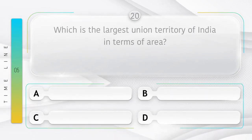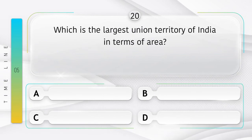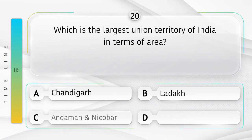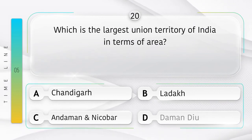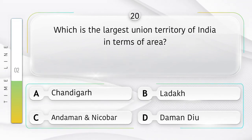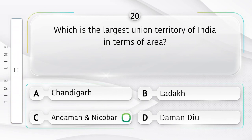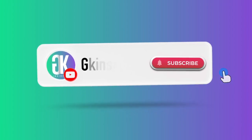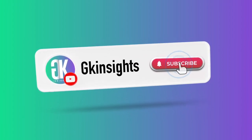Which is the largest union territory of India in terms of area? Option A: Chandigarh, B: Ladakh, C: Andaman and Nicobar, D: Daman and Diu. Answer is option C: Andaman and Nicobar.